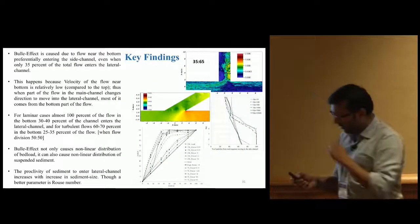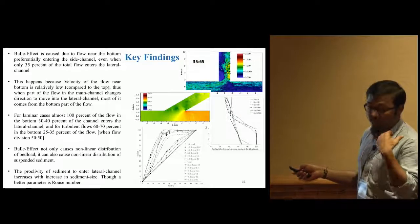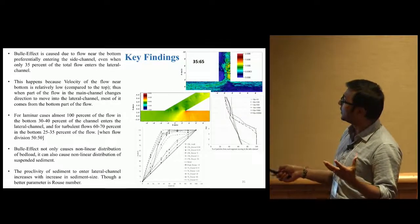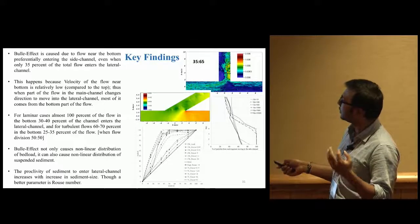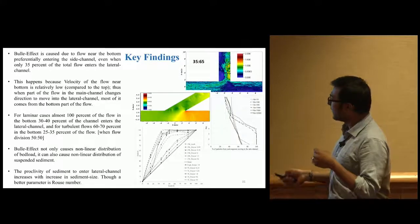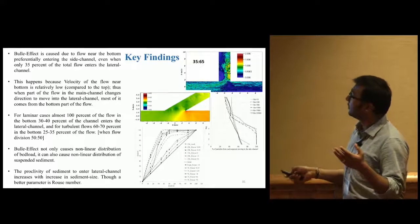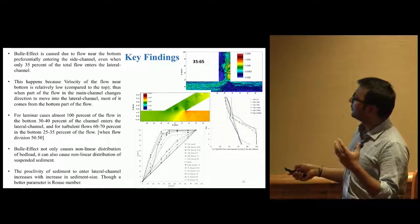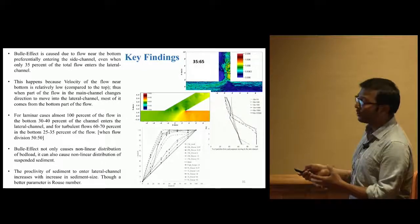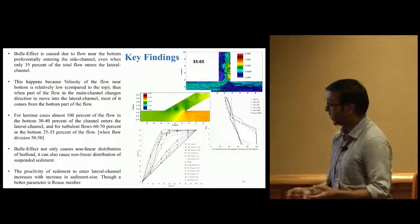In conclusion, we found the cause of the Bulle Effect: flow near the bottom preferentially entering the side channel, even when only 35% of total flow enters the lateral channel. This happens because velocity near the bottom is relatively low. When part of the flow changes direction, most flow comes from the bottom of the channel.